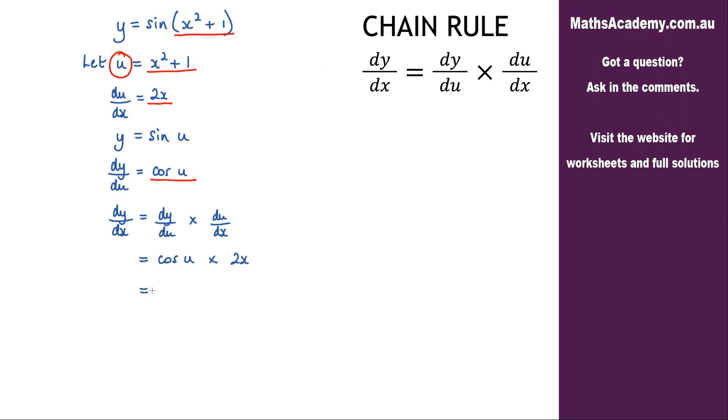And now I can go ahead and rearrange this a little bit. So I've got 2x cosine of u but u is equal to x squared plus 1. So the final answer is 2x cosine of x squared plus 1.